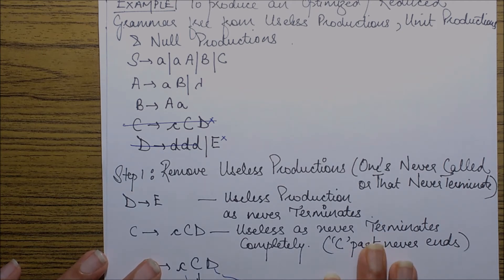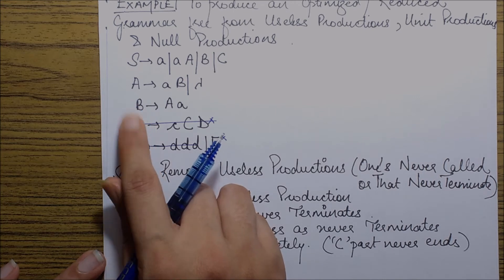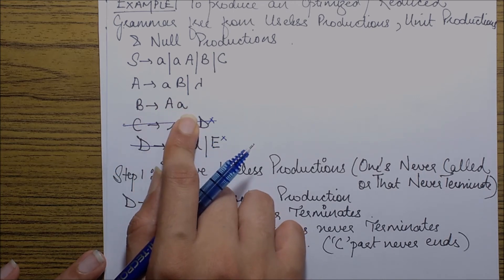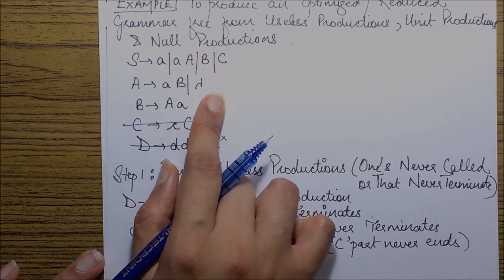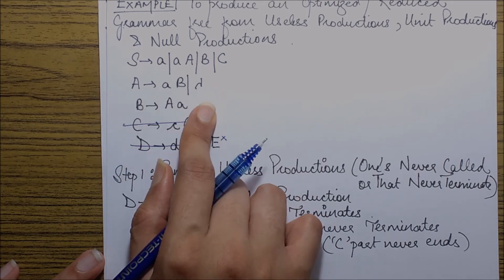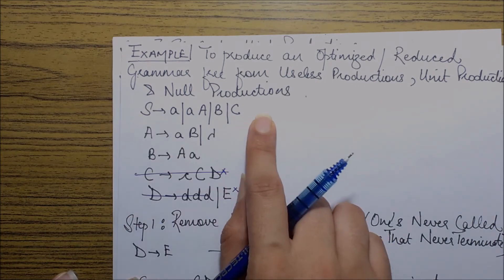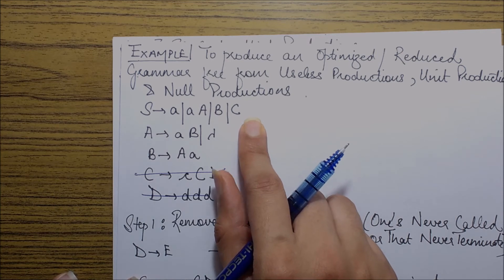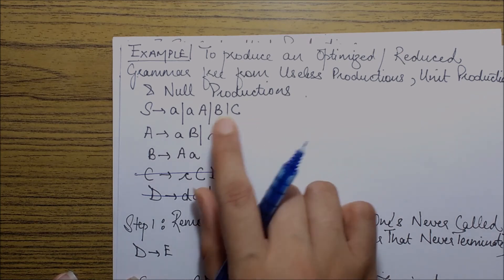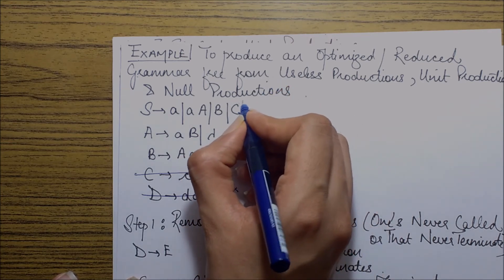Next, if I look at this production B goes to A goes to A, if I analyze it, it will be terminated by using A goes to lambda. Hence this is not a useless production. If I see this set of productions, S goes to C will be a production which won't terminate now. Hence this is also a useless production and we can directly cross it.